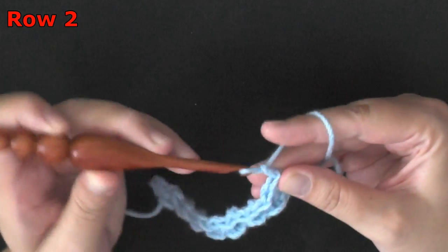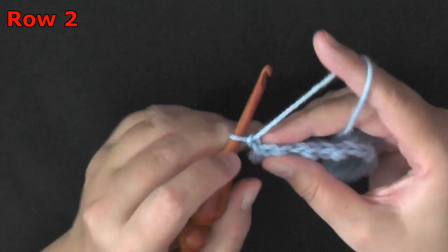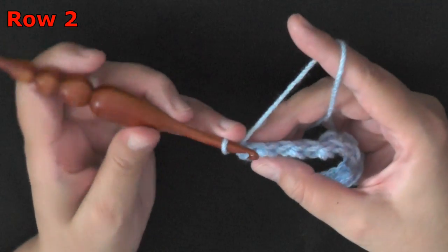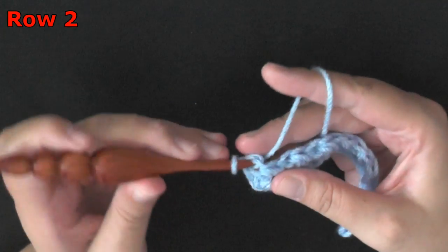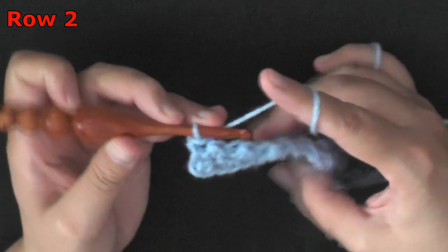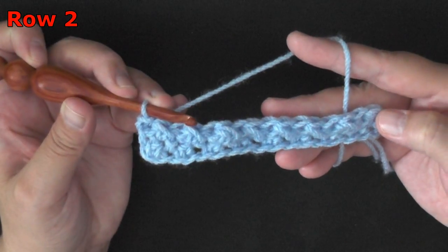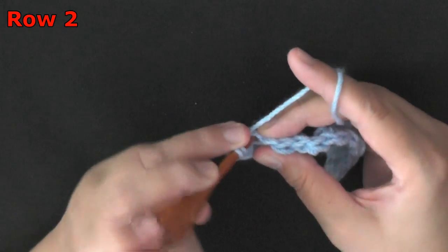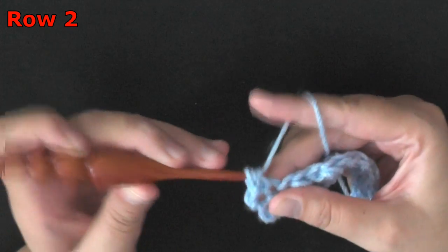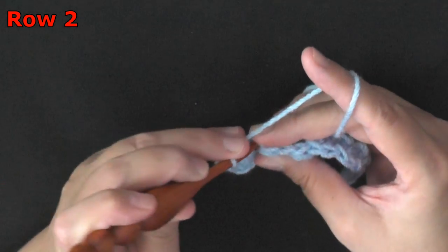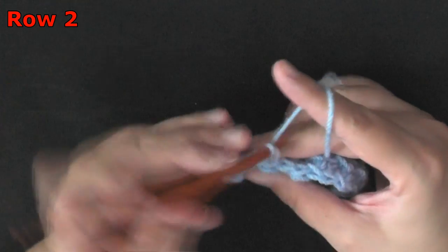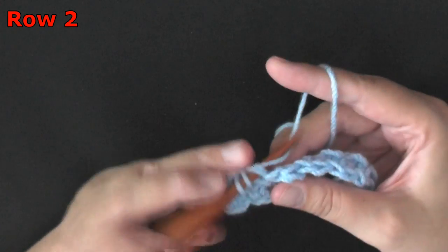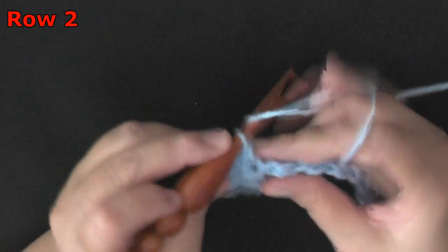For row three, chain one, turn. We ended with a slip stitch. So we'll begin our row this time with a half double crochet. Which means our very last stitch of the row should be a slip stitch. So we did our slip stitch. So the next stitch will be a half double crochet. And then again take your time making sure you're going under both loops of the stitch and not underneath that front stitch here.